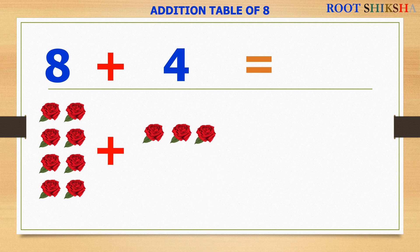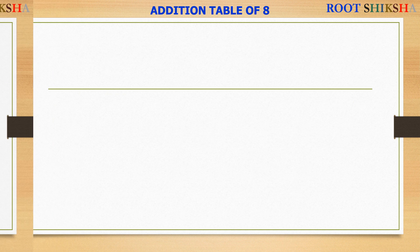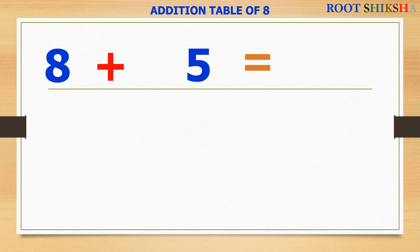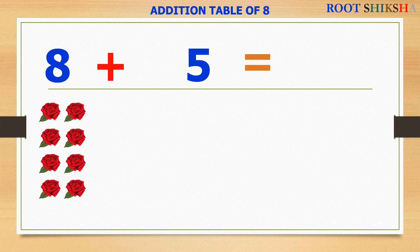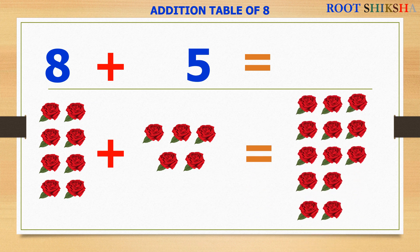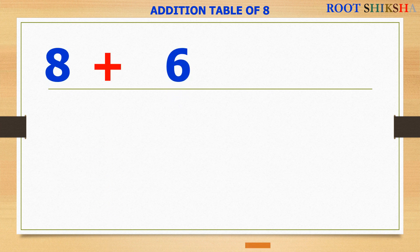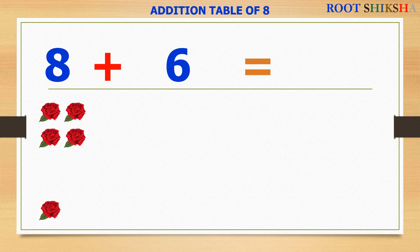8 plus 5 equals to — count with me: 1, 2, 3, 4, 5, 6, 7, 8, 9, 10, 11, 12. 8 plus 4 equals to 12. 8 plus 5 equals to — count: 1, 2, 3, 4, 5, 6, 7, 8. 8 roses plus 1, 2, 3, 4, 5, 6, 7, 8, 9, 10, 11, 12, 13. 8 plus 6 equals to 14.